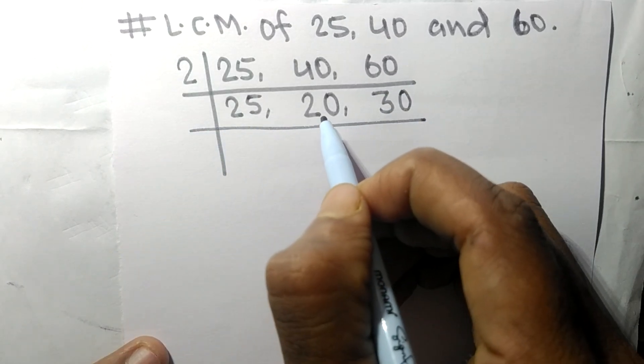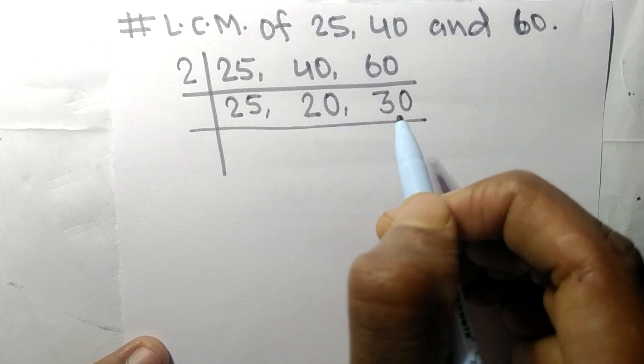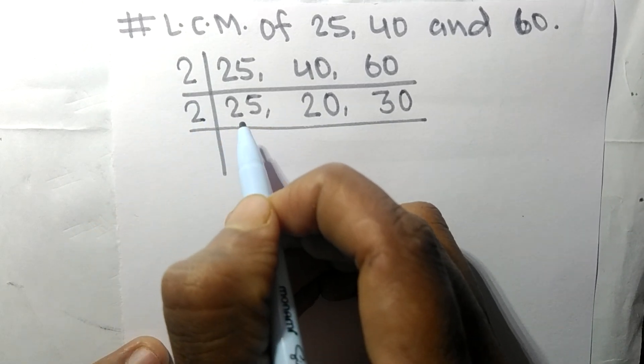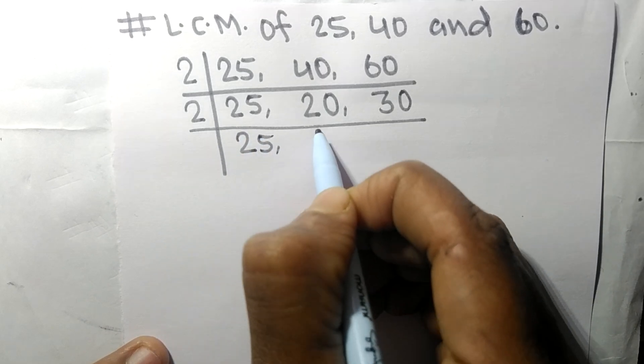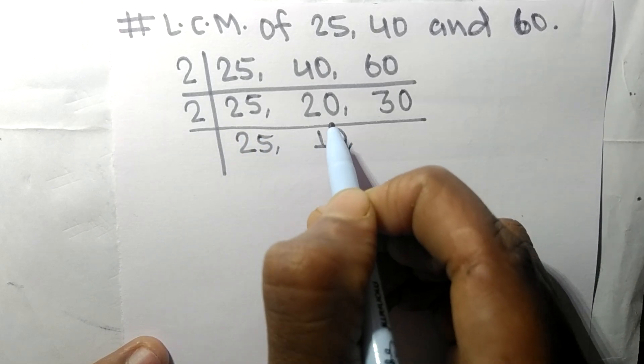So now this 20 and 30 are divisible by 2. 25 not divisible so it is same. 2 times 10 mean 20, 2 times 15 mean 30.